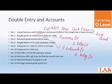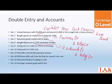Bought fixtures £1,100, paying by cheque. Mushahid, what is the entry? Fixtures debit and bank credit.